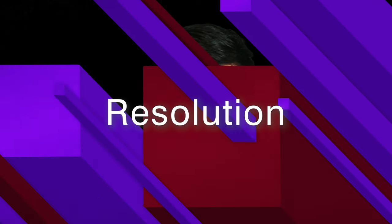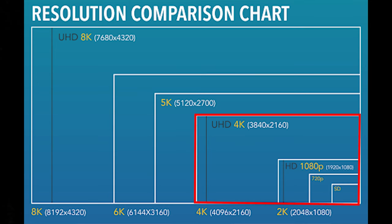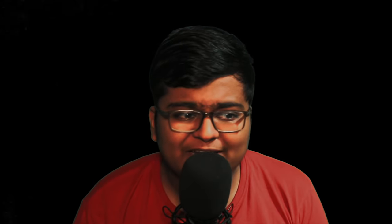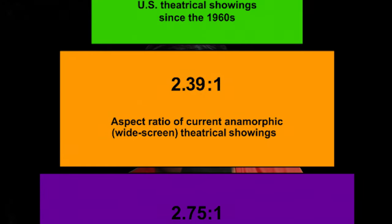Let's talk about the specifications of a DCP, starting with resolution. The common resolutions used for DCPs are 4K and 2K. The aspect ratio will be around 2.40:1 or 2.20:1. The 4K resolution is 4096x1716 and 2K is 2048x858.